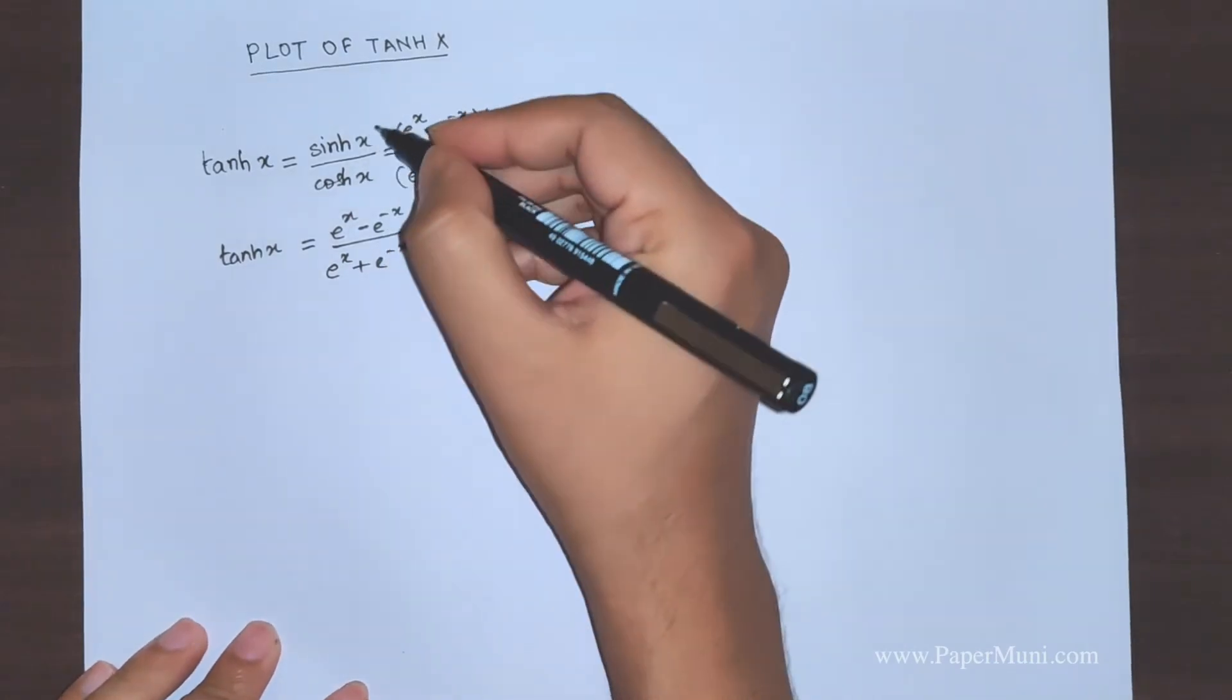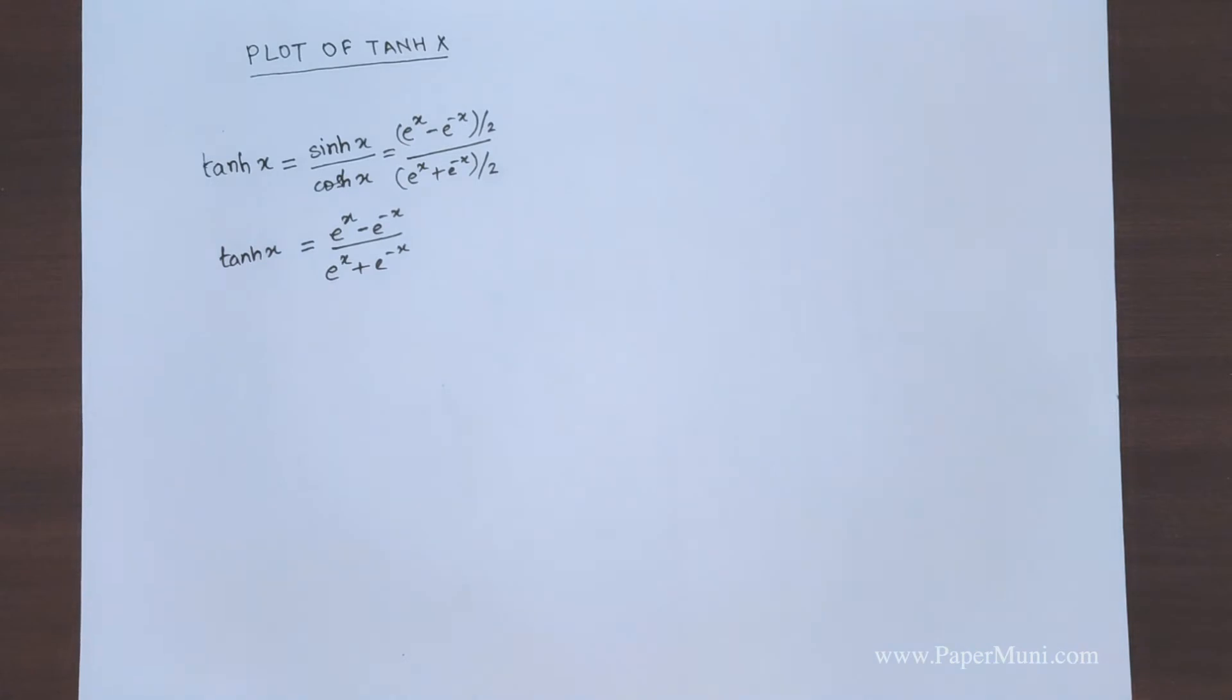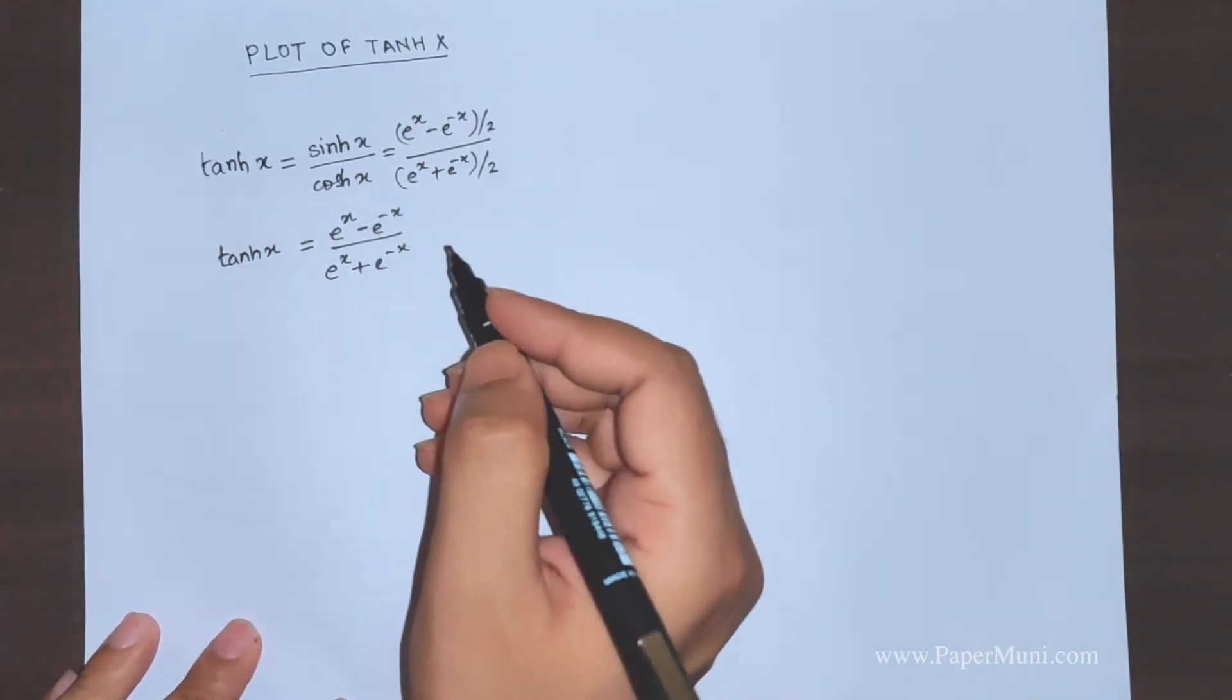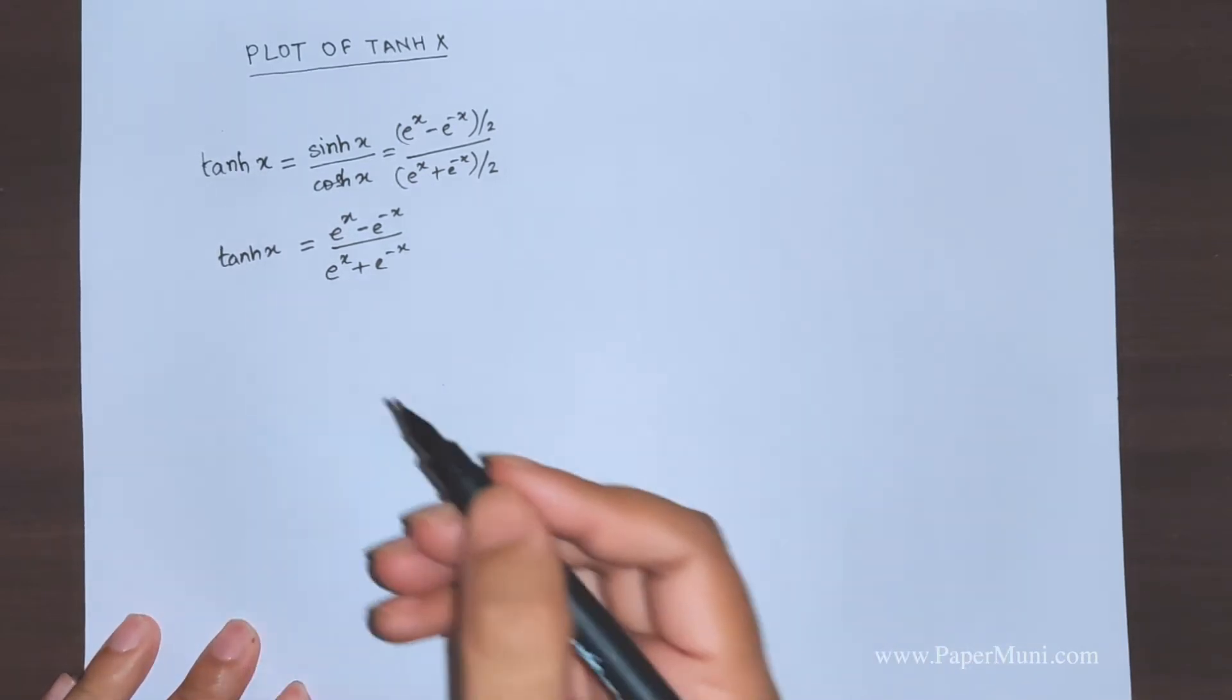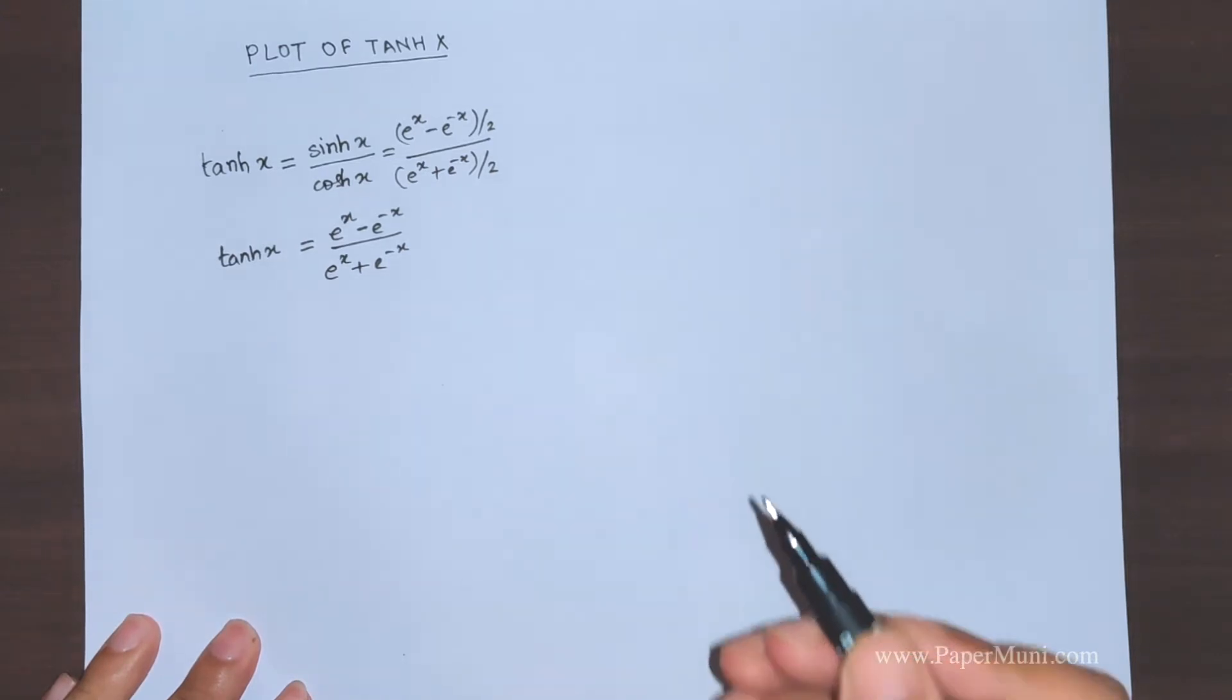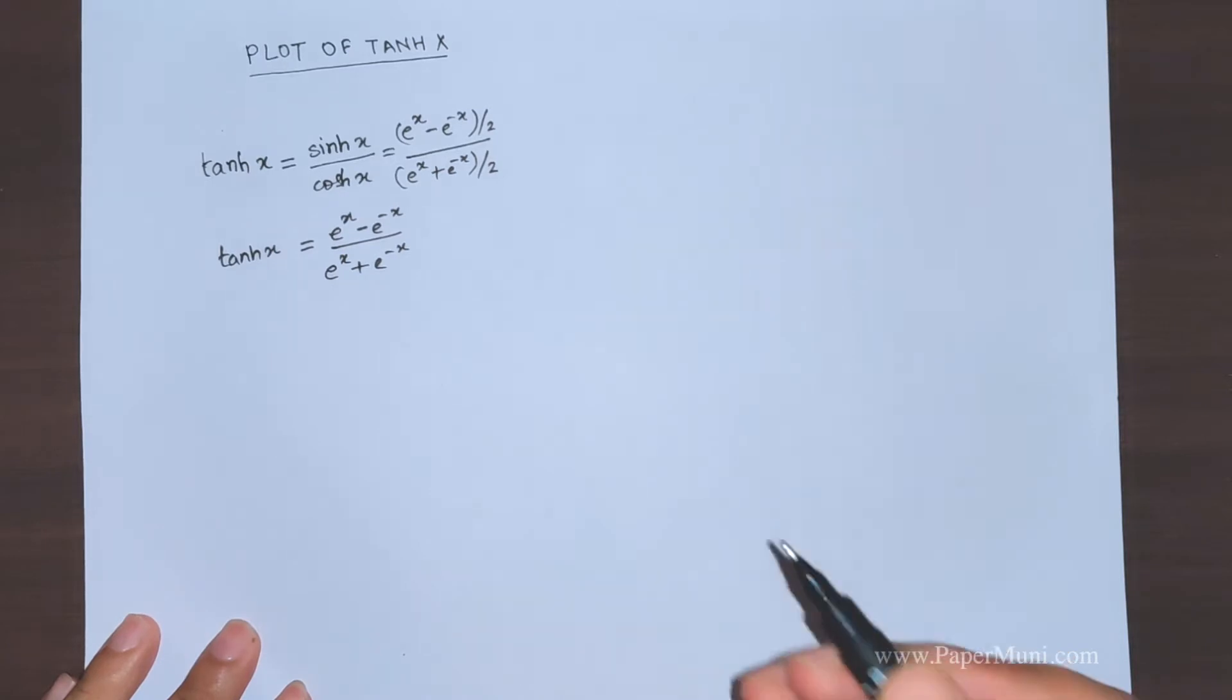You cannot simply plot sinh and cosh separately and then divide. Division is difficult to follow in graphs. So we'll find the values of tanh at different points with respect to x.